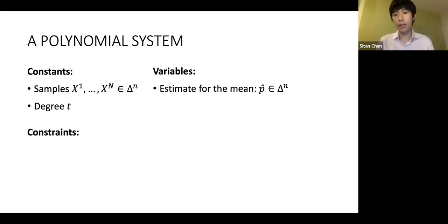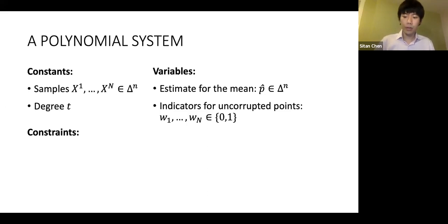The variables in the system are going to be our estimate for the mean, some p-hat which lives in the simplex, and indicators for each of the points. In particular, w_i I want to take to be equal to one if I believe that the i-th point in my data set is uncorrupted. This is the indicator for the subset I want to pick out.